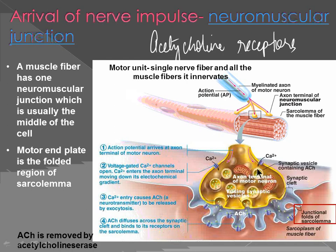The calcium causes the synaptic vesicles to travel downwards toward the lower membrane of the axon terminal, fuse with it, and release acetylcholine into the synaptic cleft. That acetylcholine attaches to the receptors on the motor end plate. Once it binds to those receptors, it stimulates the motor end plate — the sarcolemma. That was the purpose of having acetylcholine and acetylcholine receptors.